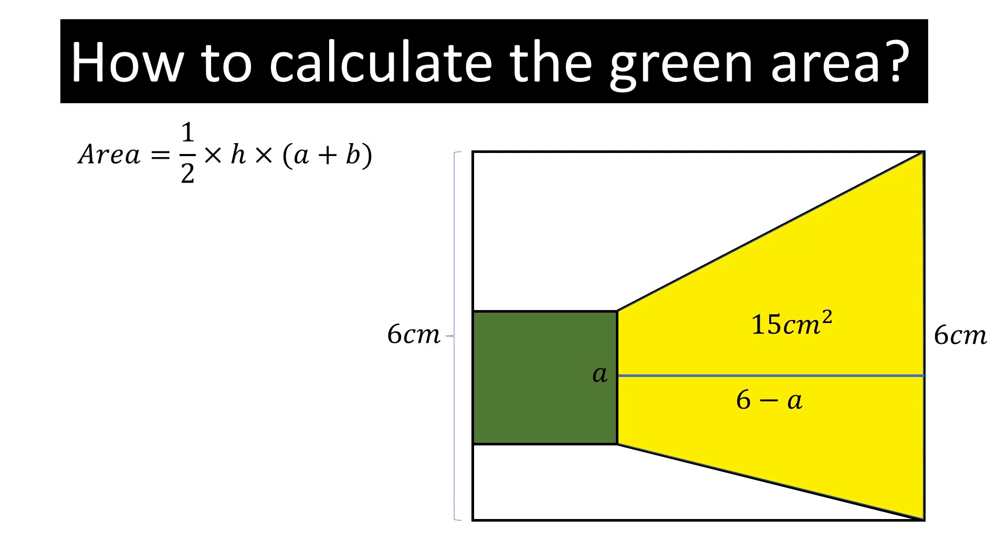Now, putting values here we will get this. Simplify this and we will get this. Multiply 2 with 15 and we will get this.